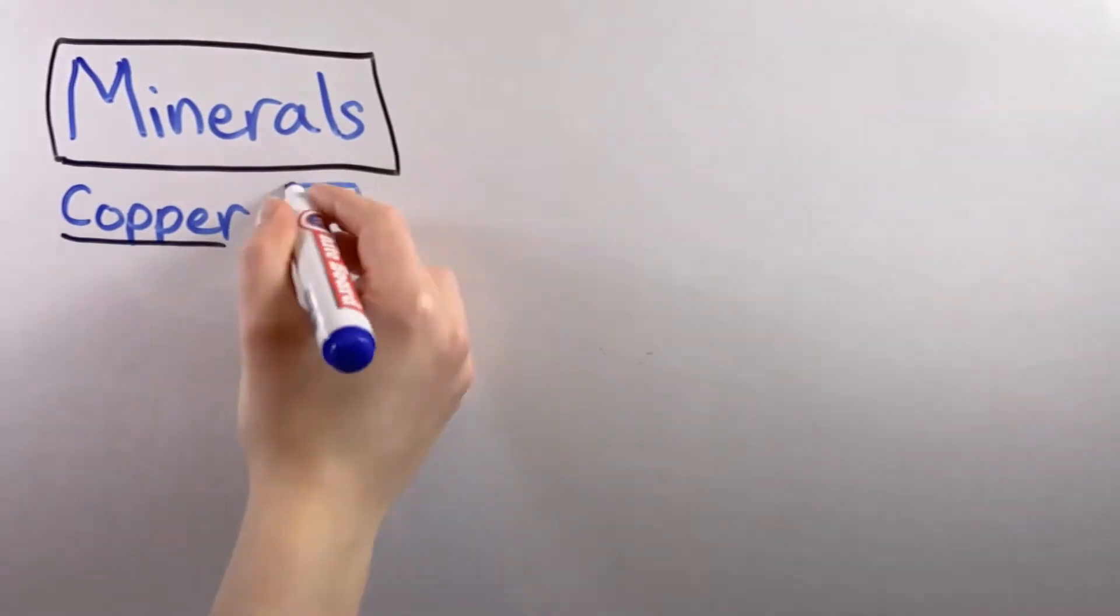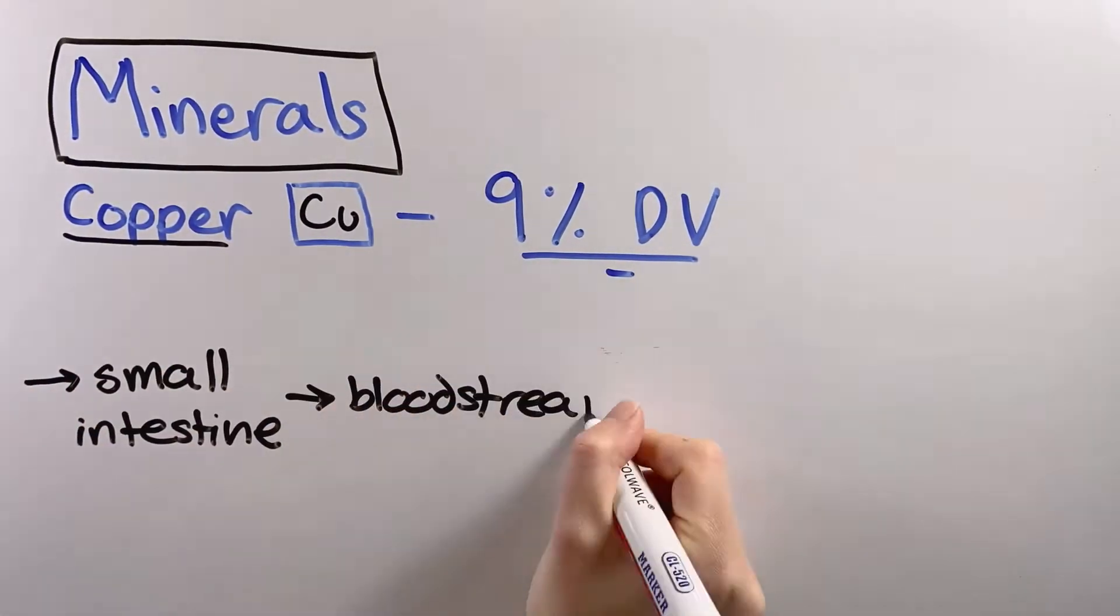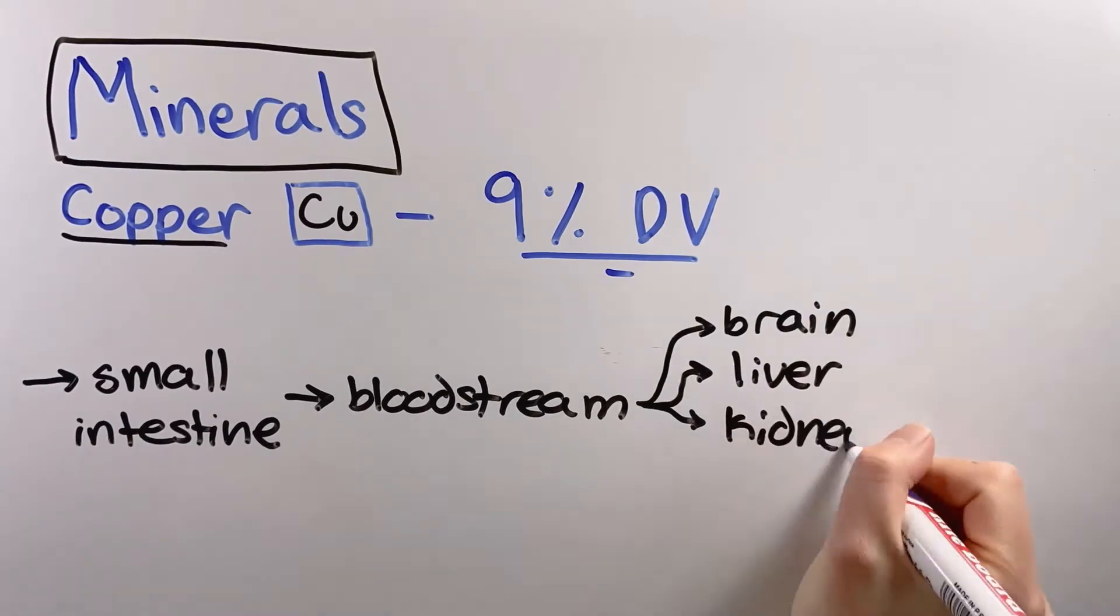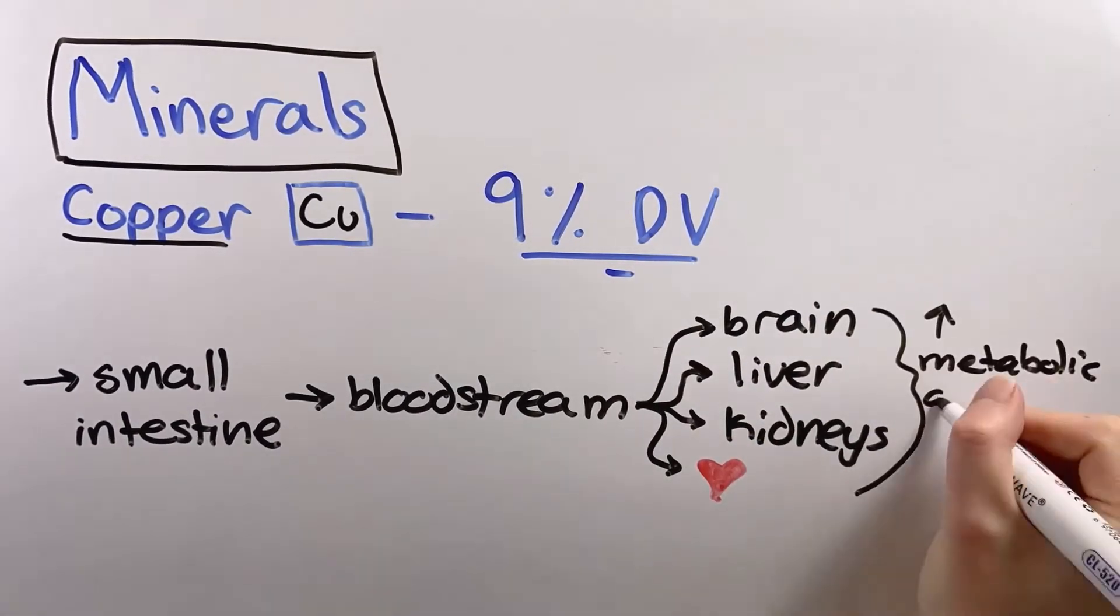2 tablespoons of black pepper contain about 9% your daily copper. Copper kick-starts many proteins, some of which are involved in brain development, the immune system, and wound healing.